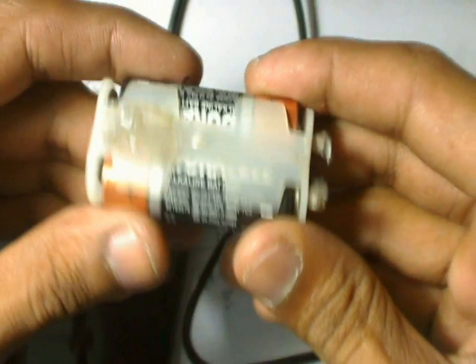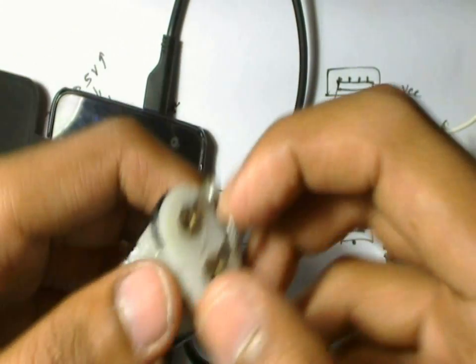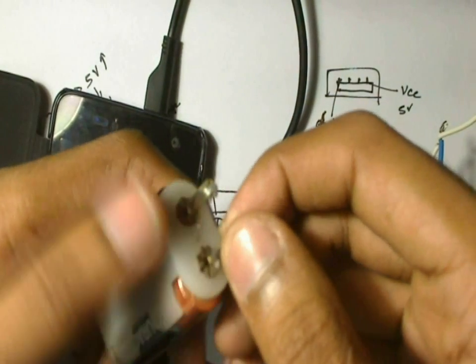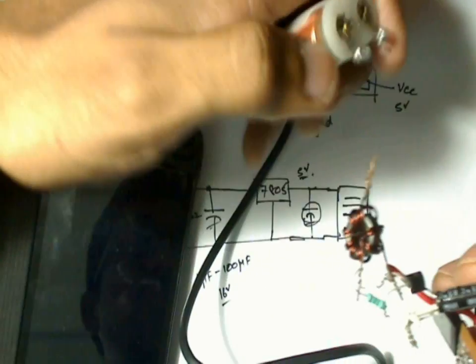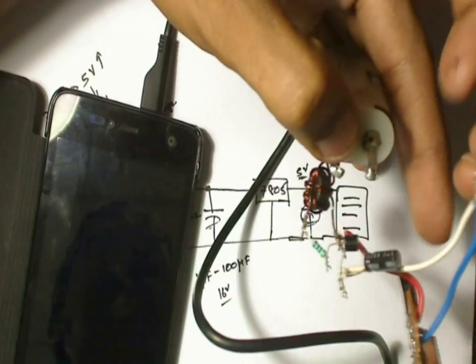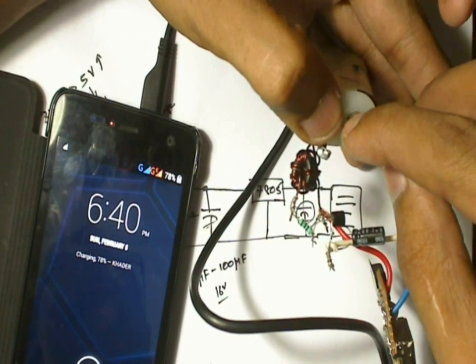I have two AA batteries here. These are used batteries, so the output voltage is not 3 volts, it's actually around 2.4 to 2.6 volts. At two terminals I'll connect these two terminals of this Joule thief. As you can see, the mobile is showing that it's charging.